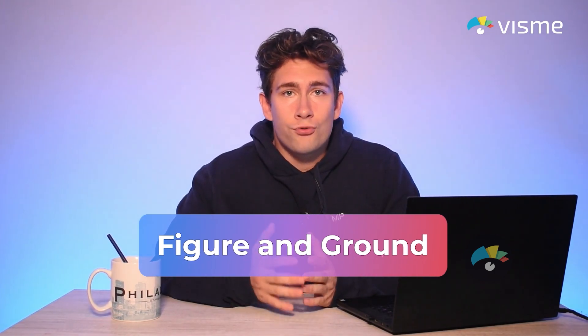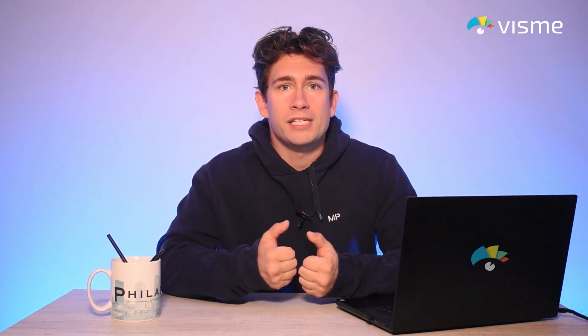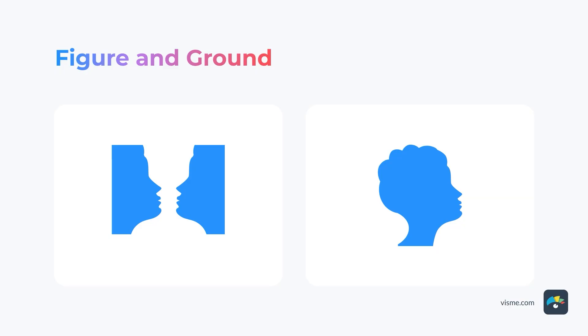The principle of figure and ground states that we perceive an object either as the element of focus in the foreground or as part of the background. People tend to determine the figure and ground relationship before making any other resolutions about what they see. We've evolved to prioritize this perception so we can better navigate our surroundings — without it, we'd be running into objects and tripping over sidewalks. In this example, when the profile of the face is alone, it's instantly perceived as a face. But on the left, the two profiles facing each other also resemble a vase, and our brains go back and forth between each visual.